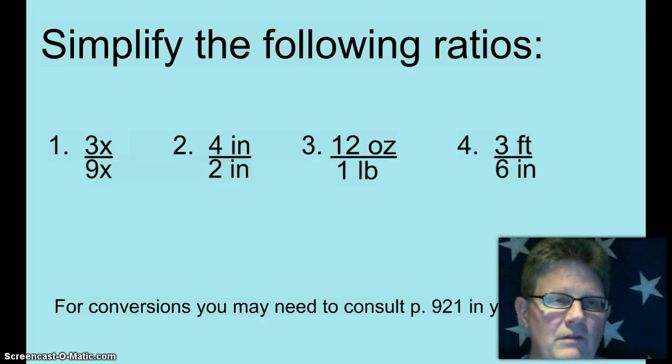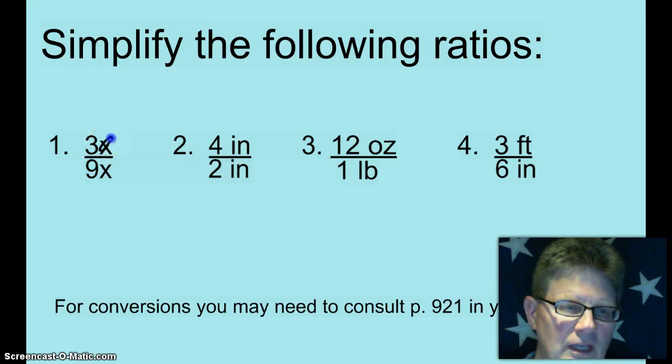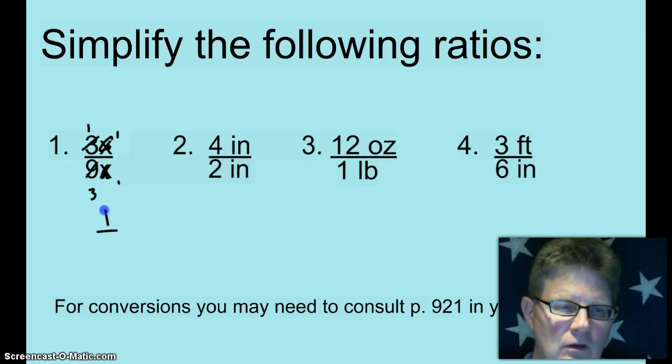Simplify the following ratios. You have 3x over 9x. You can cancel out the x's and then you can simplify the numbers. What goes into 3 that goes into 9? 3 does. So that ratio simplifies to 1 over 3.